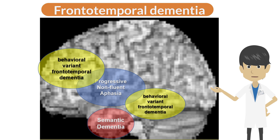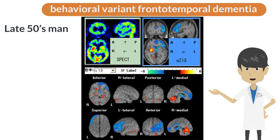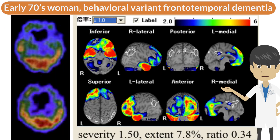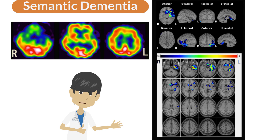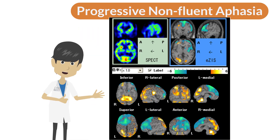Frontotemporal dementia includes behavioral variant frontotemporal dementia, progressive nonfluent aphasia, and semantic dementia. The main locus of lesions in behavioral variant frontotemporal dementia is the frontal cortex and temporal lobe; in progressive nonfluent aphasia, the left perisylvian cortex; and in semantic dementia, the temporal pole. Cases include: decreased perfusion in the frontal lobe in behavioral variant FTD (late 50s man); widespread hypoperfusion in the frontal cortex and temporal lobe in behavioral variant FTD (early 70s woman); hypoperfusion in the left temporal pole in semantic dementia; and decreased perfusion from the left perisylvian fissure to the frontal cortex in progressive nonfluent aphasia.